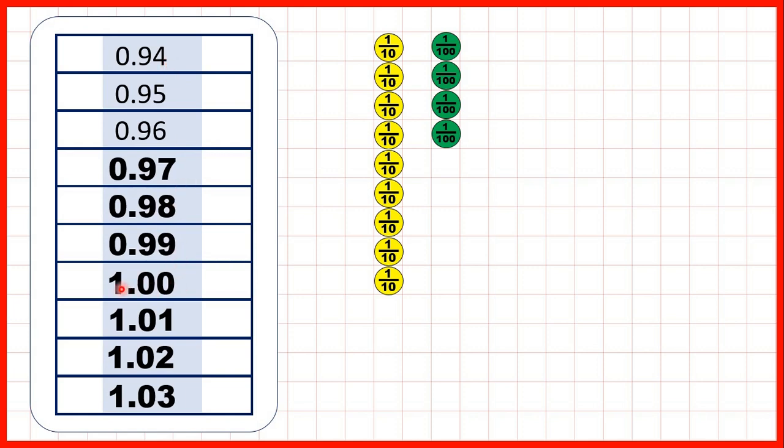But we don't normally write 1.00. Because if you have a decimal point and then zeros on the end of a number you have a whole number. So notice we get 0.99, then one whole, then 1.01.